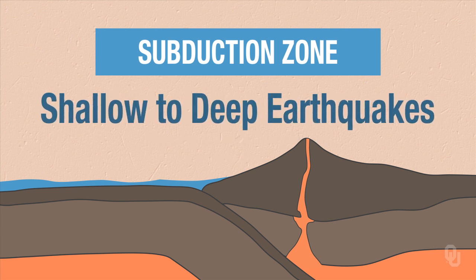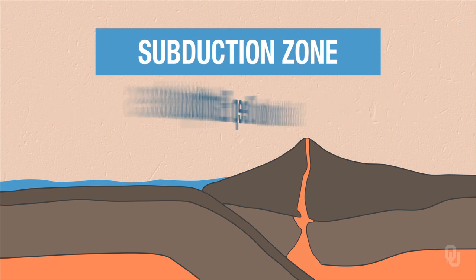You're going to get shallow to very deep earthquakes, up to 700 kilometers. And you're also going to get reverse faults, or low angle reverse faults, called thrust faults.